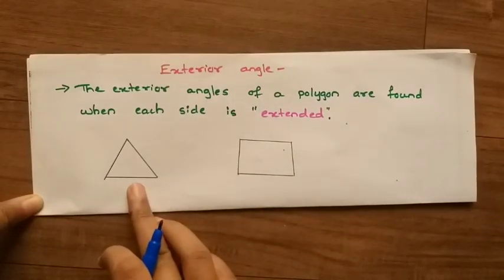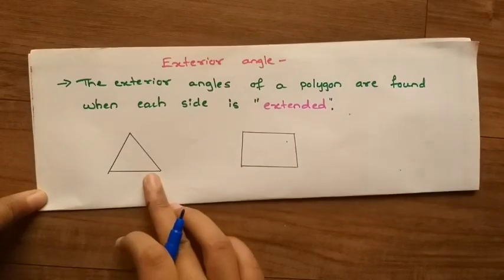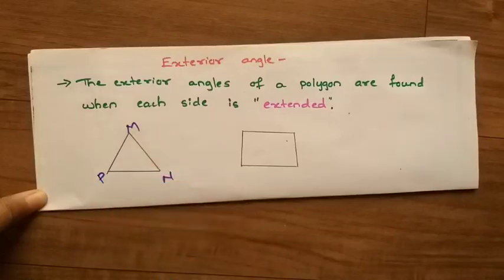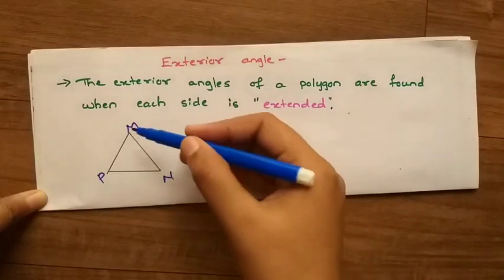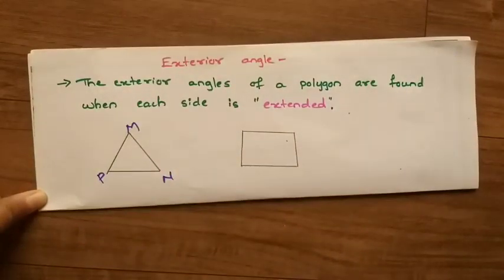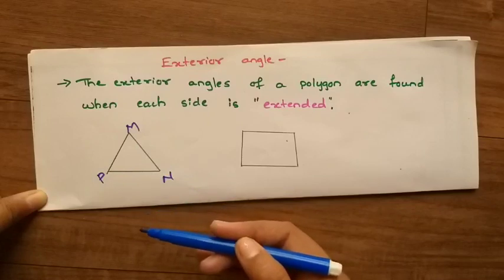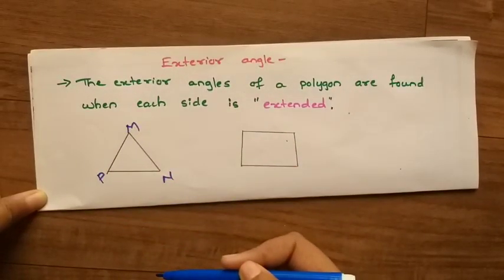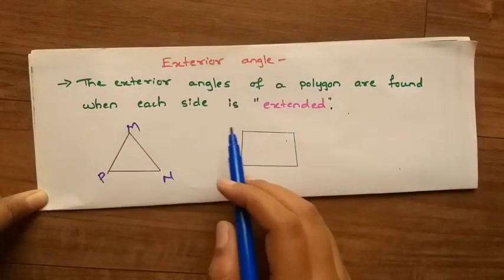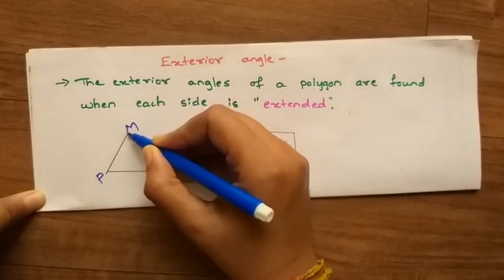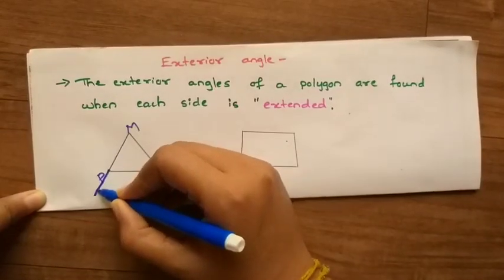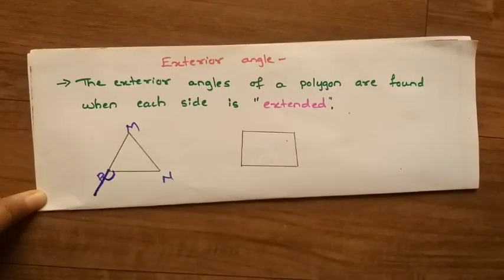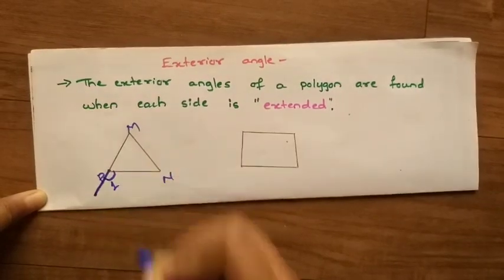In the triangle figure, we have three sides. First, label the figure M, N, P. We know that a triangle always has three sides, three angles, and three vertices. PM, MN, and NP are the sides. When a side is extended, it forms an exterior angle. When side PM is extended, this forms the exterior angle — give it the name angle 1.